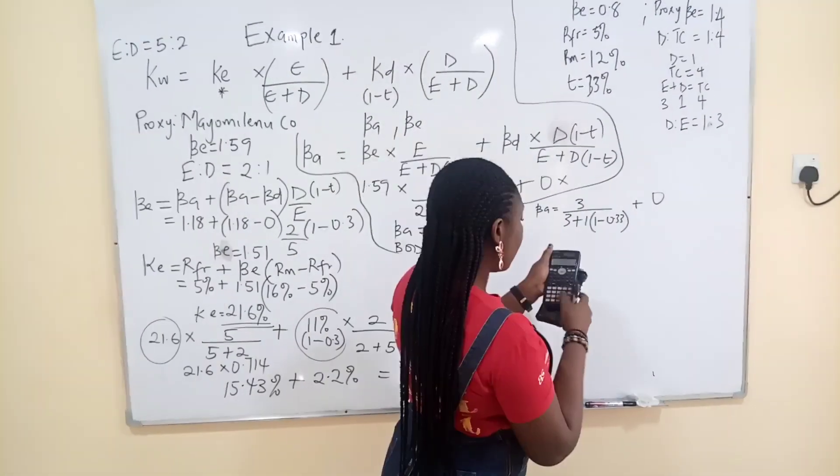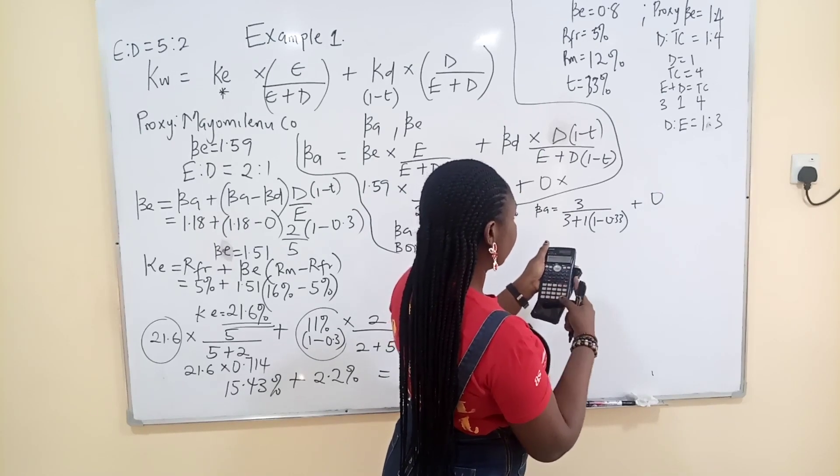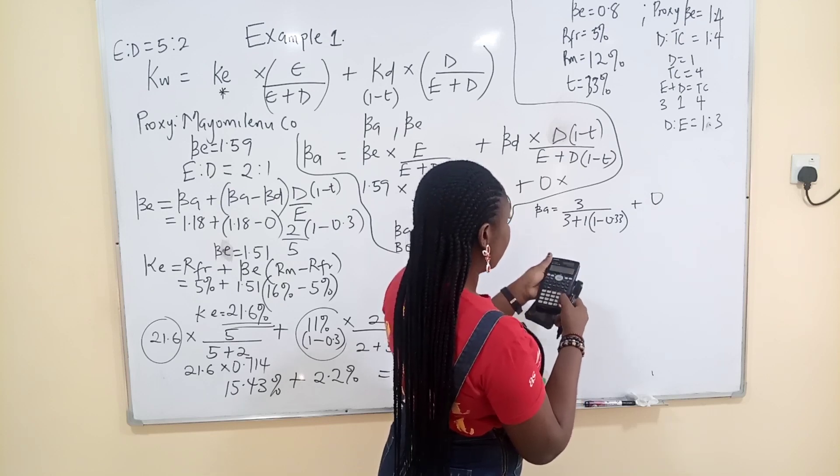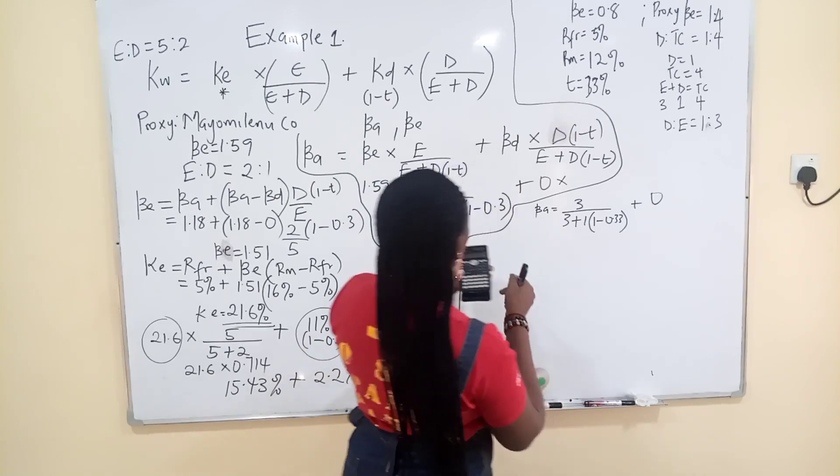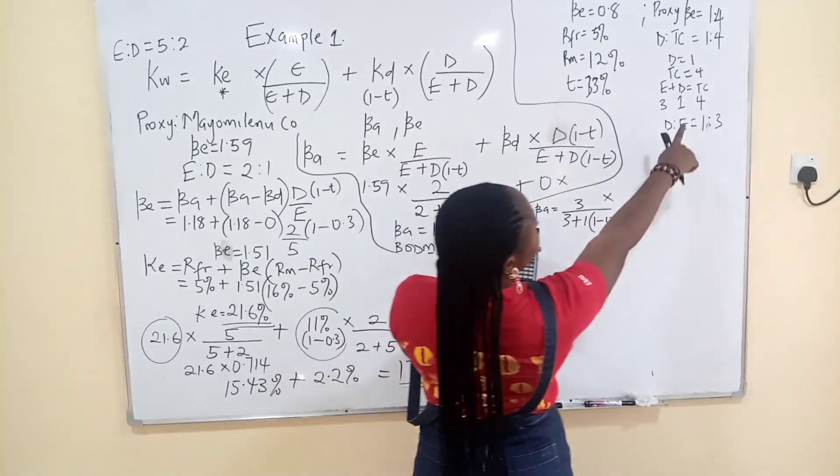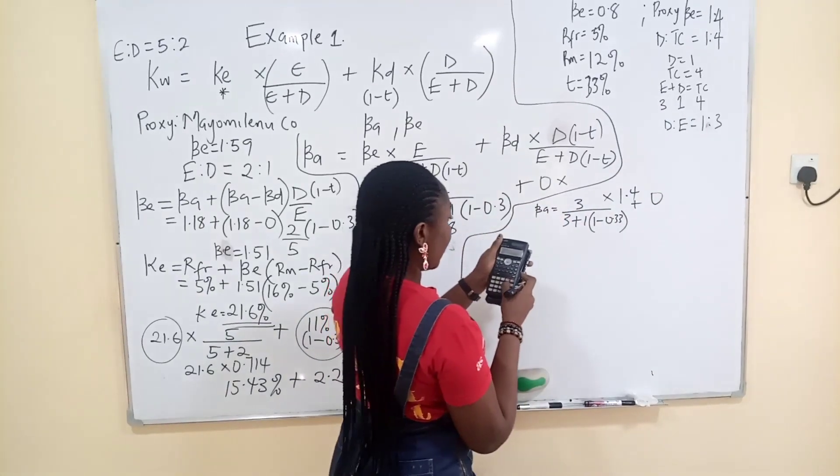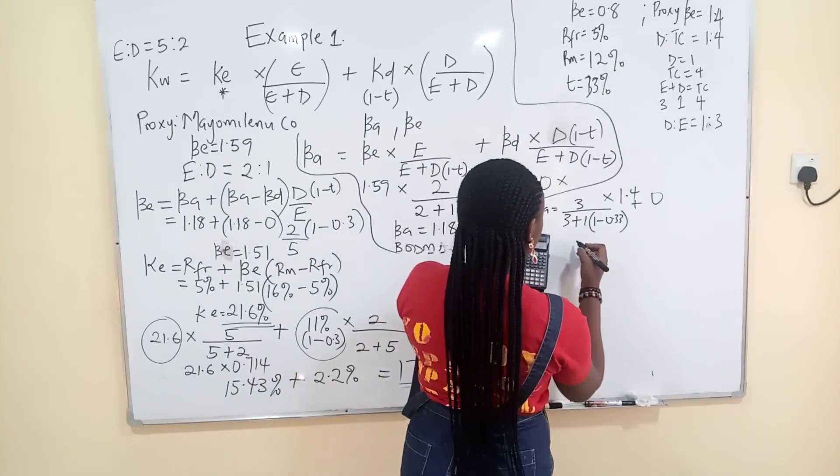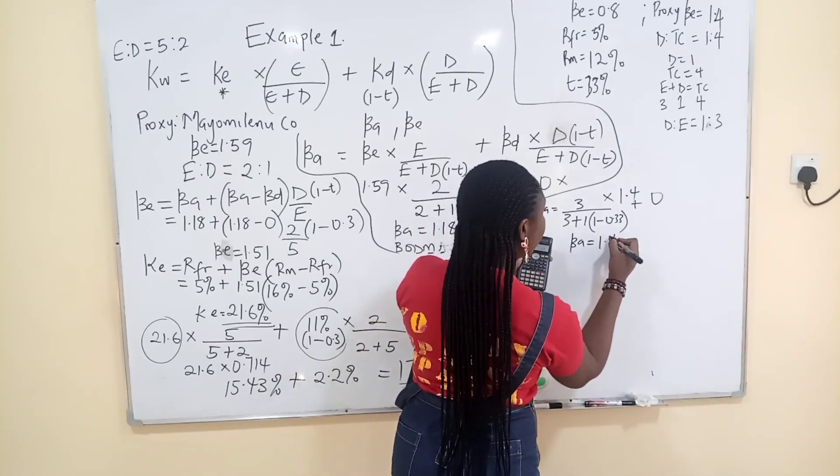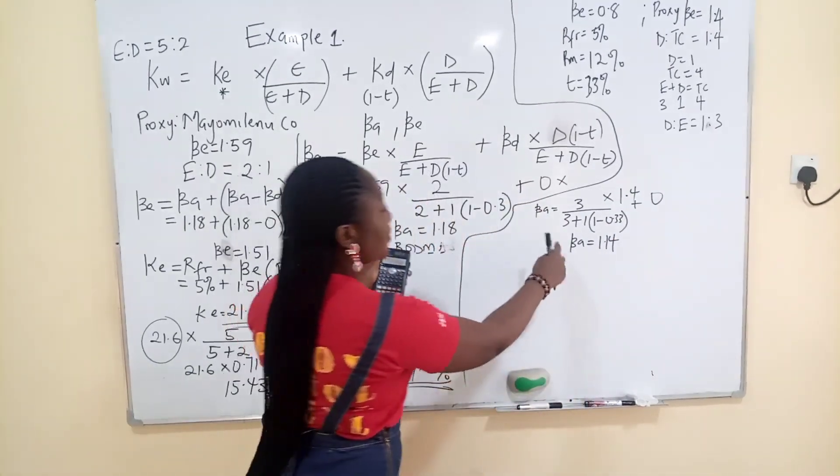Once you see no BD in the question, put it in your calculator. 1 minus 0.33, that's 0.67 times 1 plus 3. Then 3 divided by the answer. So you have this. Oh, you multiply by BE. Where is BE? BE is what? 1.4. Times 1.4. So you have your BA to be 1.14. What am I rushing? 1.14. Now when you have your BA, business risk of computer business.